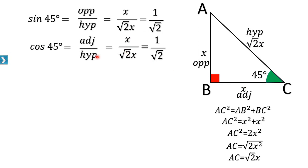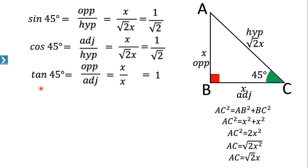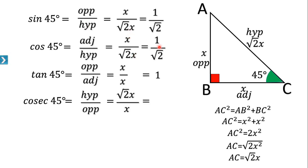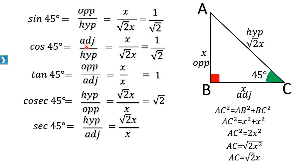tan 45° = opposite / adjacent = x / x = 1. Next, cosec 45° is the reciprocal of sin 45°, so cosec 45° = hypotenuse / opposite = √2x / x = √2. sec 45° is the reciprocal of cos 45°, so sec 45° = hypotenuse / adjacent = √2x / x = √2. cot 45° is the reciprocal of tan 45°, so cot 45° = adjacent / opposite = x / x = 1.